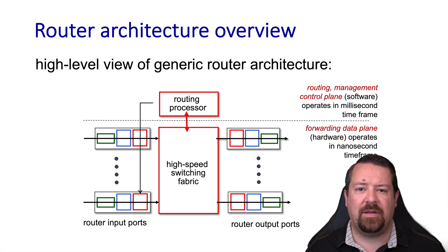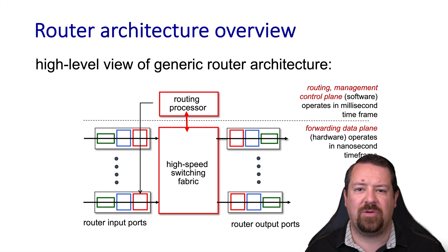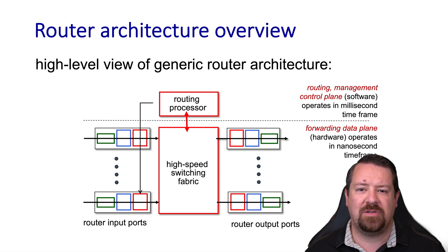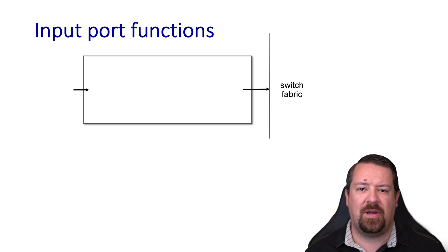The data plane, on the other hand, must be able to keep up with the rate at which packets arrive and need to be forwarded. So this means the hardware must operate several orders of magnitude faster than the control plane, and this is where most of the expense exists in developing carrier-grade routers. You'll note that we have several boxes within each of the input and output ports, so now let's break down the functions of the ports in more detail.